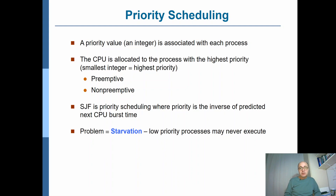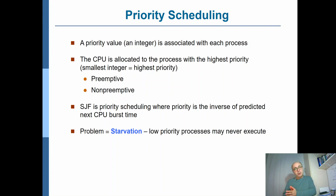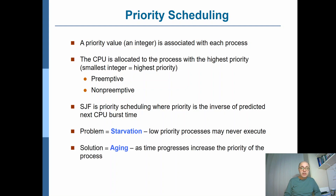The problem with priority scheduling is what we call starvation. It is possible that for a low-priority process, there are always other processes in the system ready to execute with higher priority, so the low-priority process always gets postponed. It can never get into the CPU — we say it will starve to death because it can never execute.